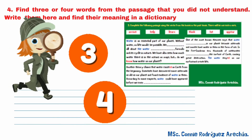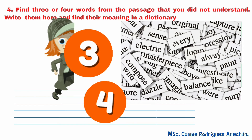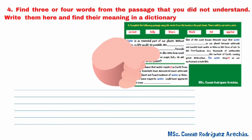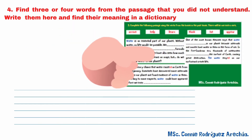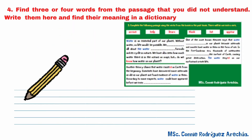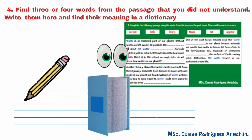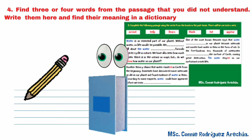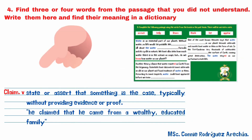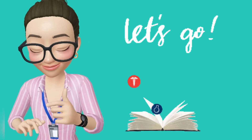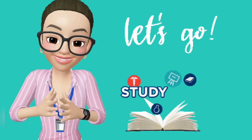Activity four: find three or four words from the passage that you did not understand. Write them here and find their meaning in a dictionary. Look at the example. Now let's go to work — you can do it!